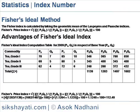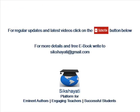Fisher's price index is: square root of (sigma P1Q0 / sigma P0Q0) multiplied by (sigma P1Q1 / sigma P0Q1), into 100. This equals: root over (1283 / 1139) multiplied by (1682 / 1497), into 100, which equals root over 1.1264 multiplied by 1.1235, into 100, which equals 1.1249 into 100, which equals 112.49. Thank you for watching the video.